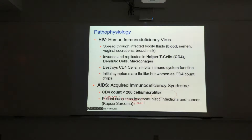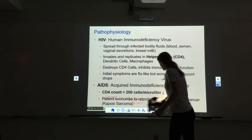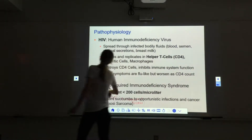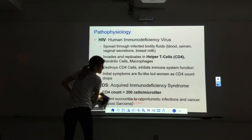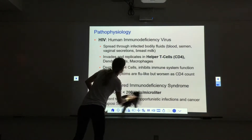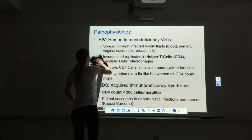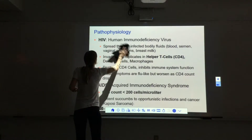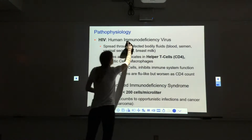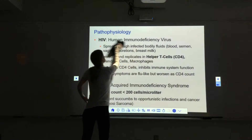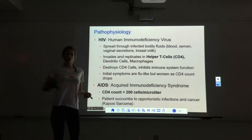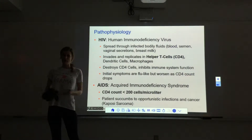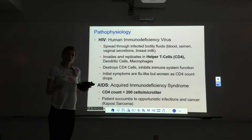The last couple slides are looking at a couple types of disorders that have to do with the immune system. The first thing we'll look at is HIV and then how that can progress to AIDS. HIV is human immunodeficiency virus — immunodeficiency has something to do with a deficient immune system. The immune system is not working as well as it should.